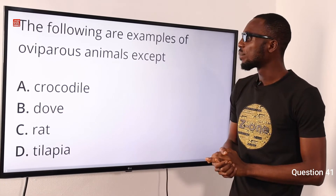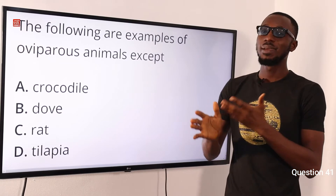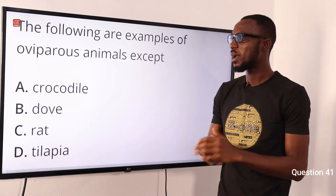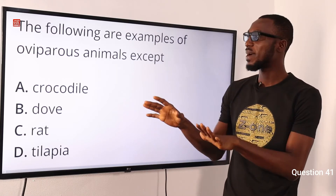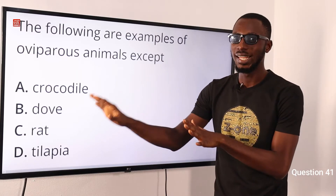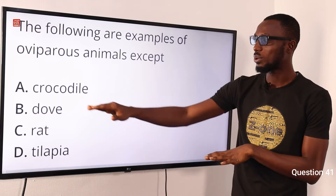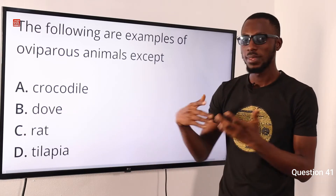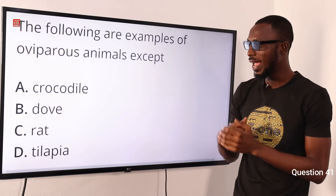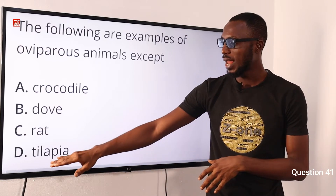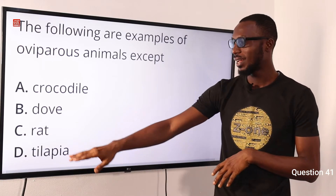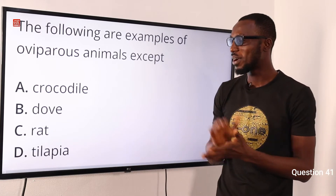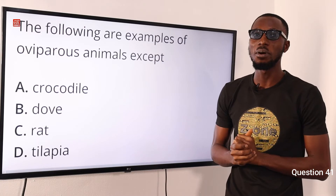The following are examples of oviparous animals except what? Oviparous animals lay eggs, so we are looking for the animal that does not lay eggs from the options provided. Crocodile — reptile, lays eggs, oviparous. Dove — bird, lays eggs, oviparous. Tilapia — fish, lays eggs. Rat is a mammal, and mammals are viviparous. So the correct option is option C for rat.